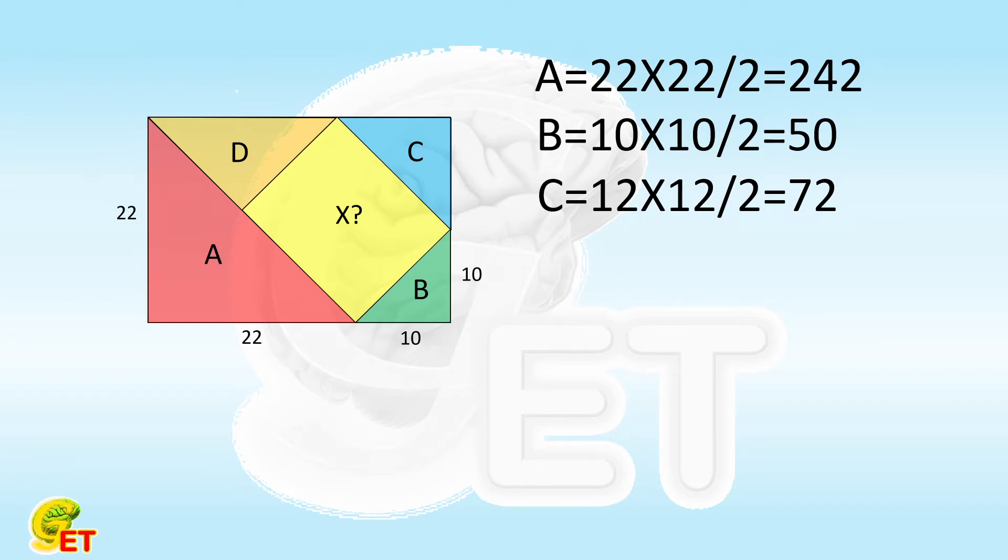The area of triangle D is not calculated in the same way, because we can add a line to easily divide D into two parts. Each part is totally the same as triangle B, so the area of D equals 2 times the area of B, equals 100.